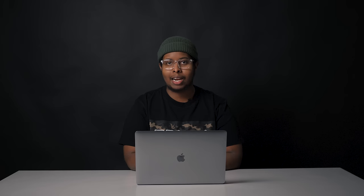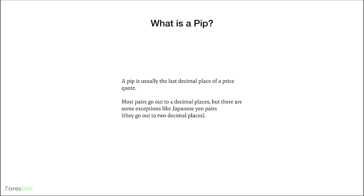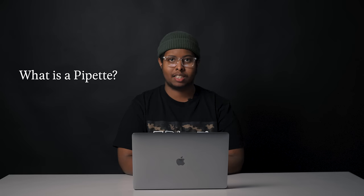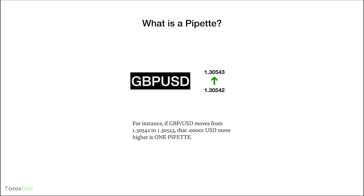Now let's talk about a pip. What is a pip? The unit of measurement to express the change in value between two currencies is called a pip. For example, if EUR/USD moves from 1.1050 to 1.1051, that 0.0001 USD rise in value is one pip. A pip is usually the last decimal place of a price quote. Most pairs go out to four decimal places, but there are exceptions like the Japanese yen pairs, which go out to two decimal places. A pipette refers to a fractional pip — brokers that quote to 5 and 3 decimal places. For instance, if pound/USD moves from 1.30542 to 1.30543, that 0.00001 move is one pipette.